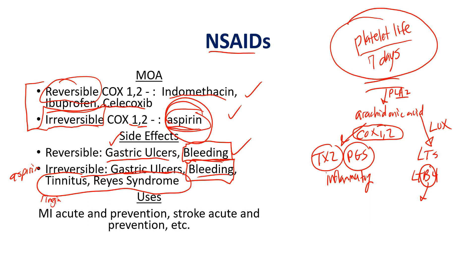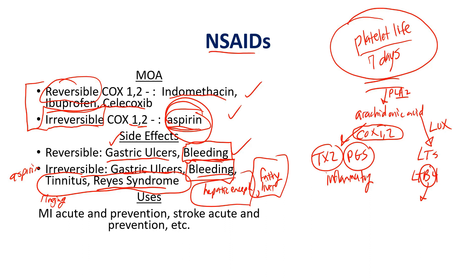Reye syndrome is when children take aspirin. Children are never supposed to take aspirin, especially with a febrile infection suspected to be viral. What can happen is hepatic encephalopathy and fatty liver, which can be life-threatening. So if a test question mentions a seven-year-old who had a fever, took some over-the-counter drug, and then developed fatty liver and hepatic encephalopathy symptoms — think Reye syndrome. You never give children aspirin with febrile illnesses. Some viral illnesses don't even have a fever, so you really don't want to give aspirin to children at all.